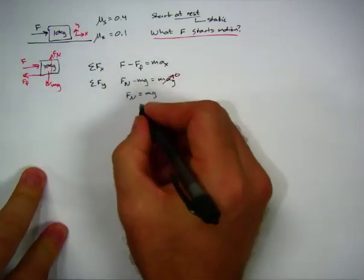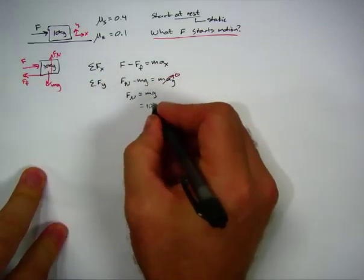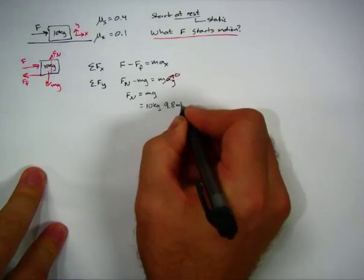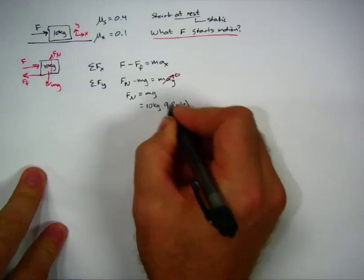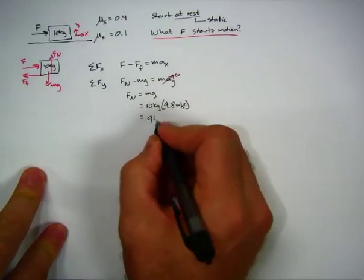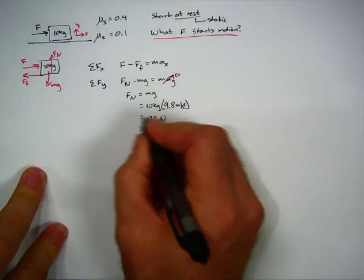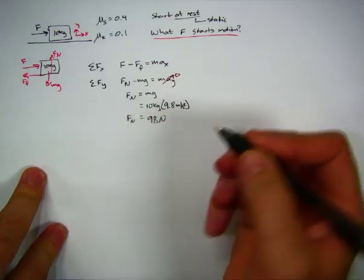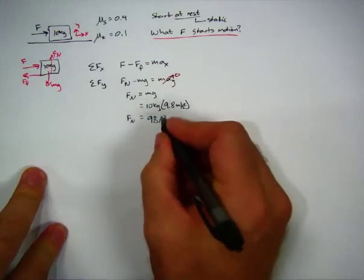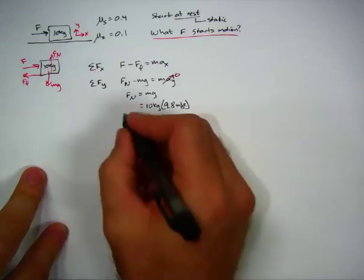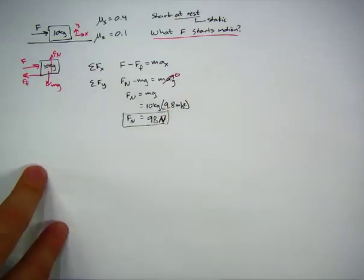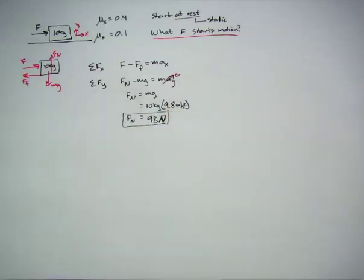We can immediately solve the Y equation and say F-normal equals Mg. Since this is a 10 kilogram box, that's 10 kilograms times 9.8 meters per second squared, which means the normal force is equal to 98 newtons. So I know my normal force is 98 newtons in this case.